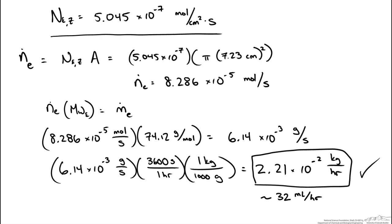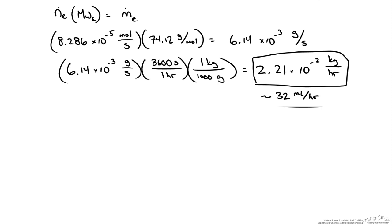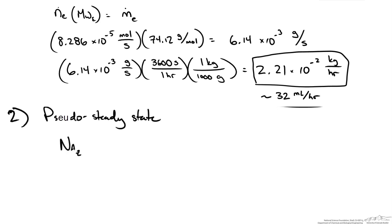The second part of the question asks how long it takes for the ether to evaporate. As the fluid evaporates, the stagnant layer thickness increases. We neglect accumulation of ether in the expanding film space, making this a pseudo steady state case. Even though something is changing with time, we assume no accumulation, so the flux of ether equals what is leaving the system. This flux must therefore equal a negative accumulation — a disappearance — in the liquid ether in the beaker itself.